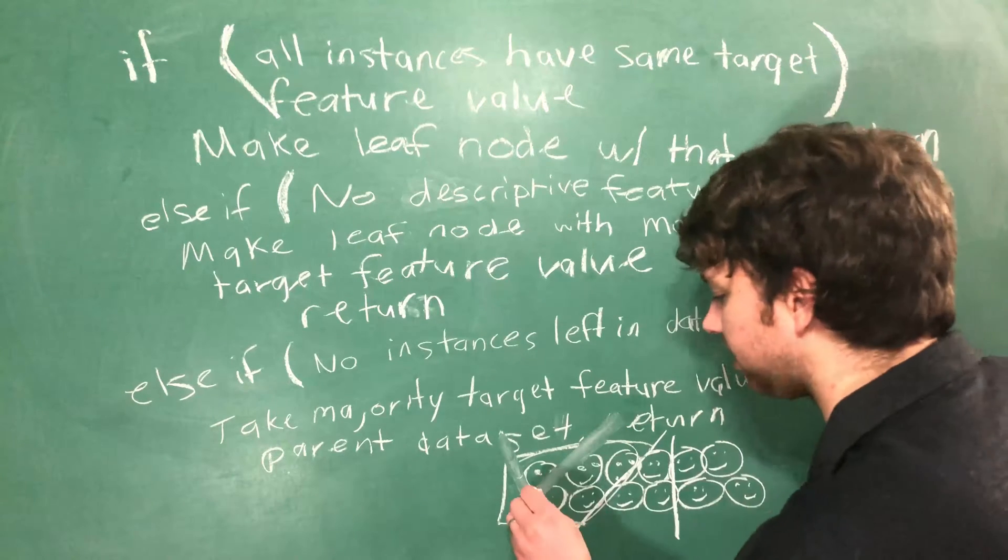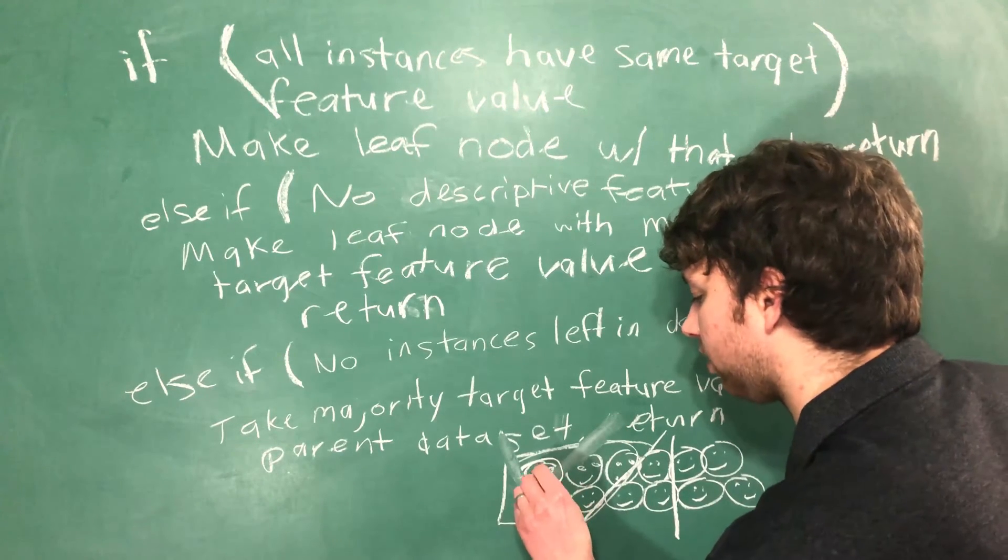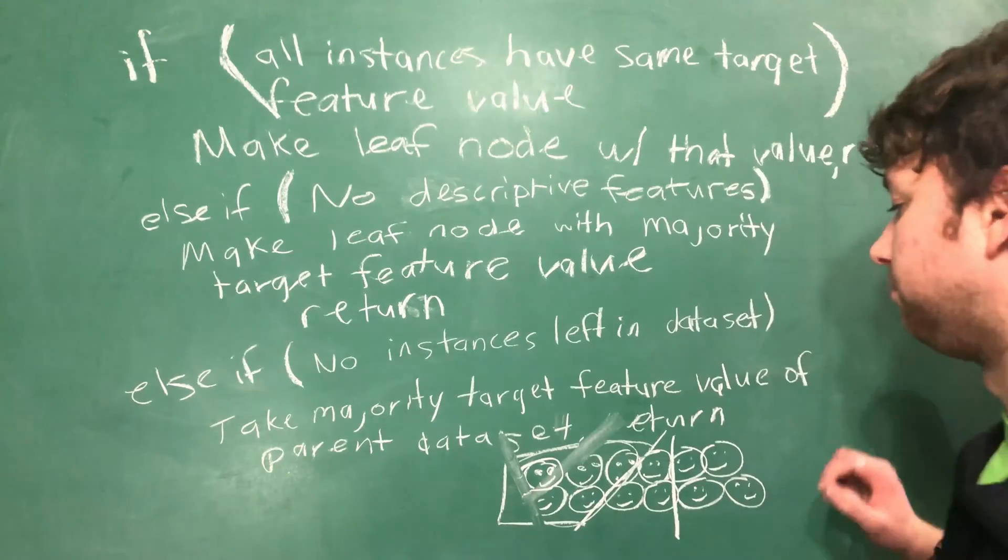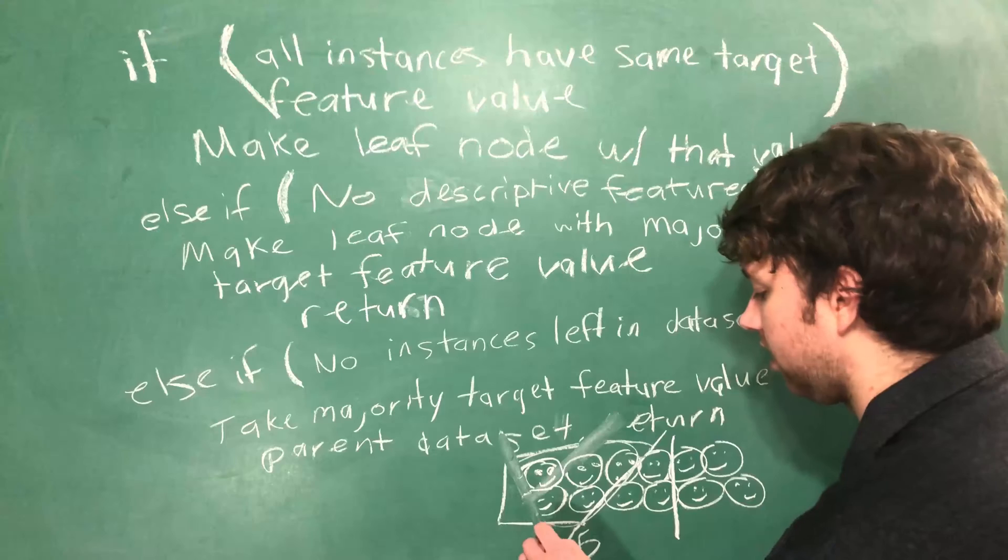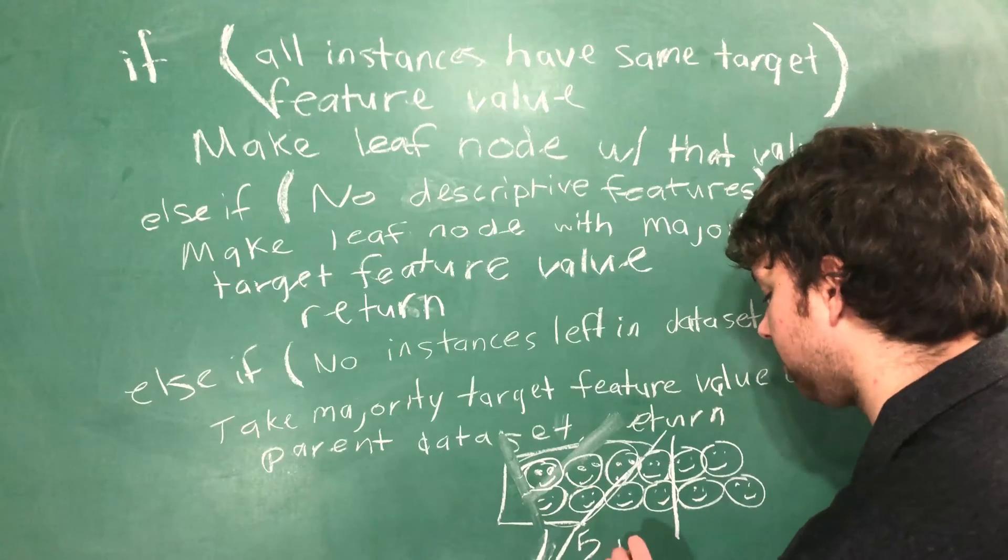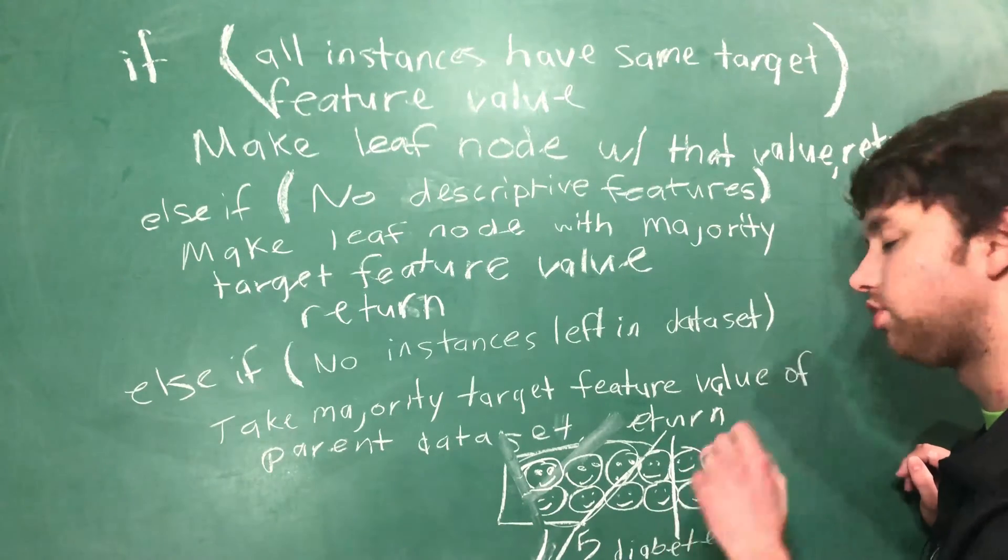Then we're going to take the majority at this point. If one out of five have diabetes, well then the majority is that most do not have diabetes, so that is what we would use in this situation.